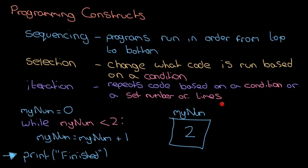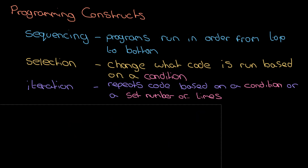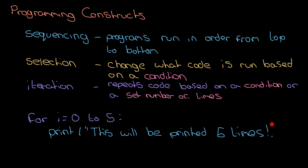There's another type called count-controlled iteration. A quick example: 'for i equals zero to five, print...' — this will print five times. The keyword 'for' is what we use for count-controlled iteration, and anything inside the for loop gets run that set number of times.